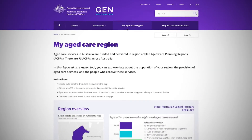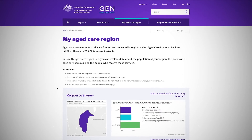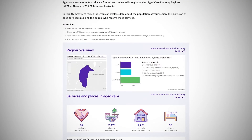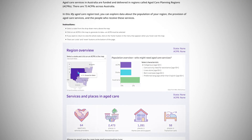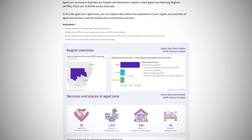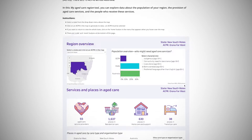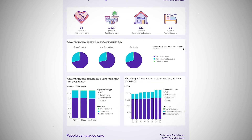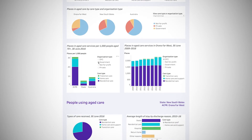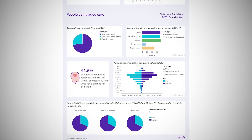The My Aged Care region is another unique tool of the site. Unlike most areas on JEN that give you information for all regions in Australia based on selected criteria, this area allows users to isolate an area and get data on just that region.